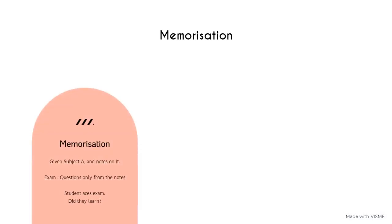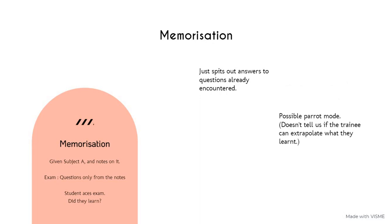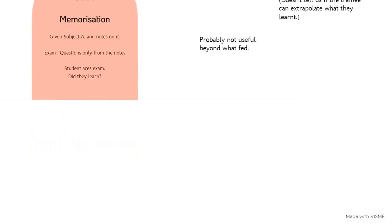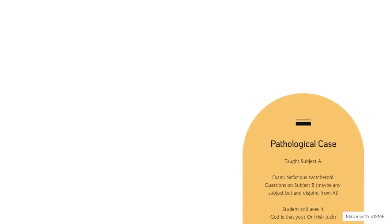In memorization, the student memorizes and spits out answers to questions already encountered in the notes. To say that it's learning would be like saying that a parrot that happens to speak a few Arabic words is halfway fluent in Arabic. It doesn't tell us if the trainee can extrapolate what they learned. This just means that the machine or student is not useful beyond what they are fed.